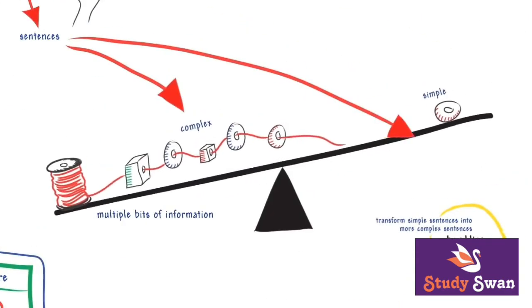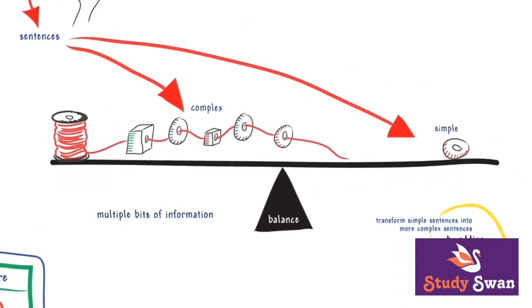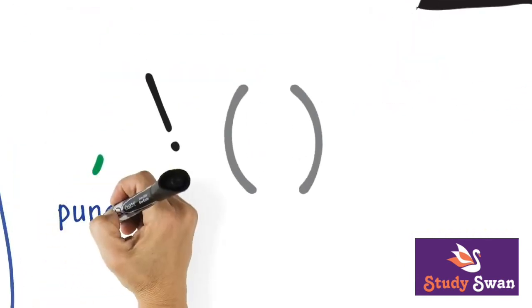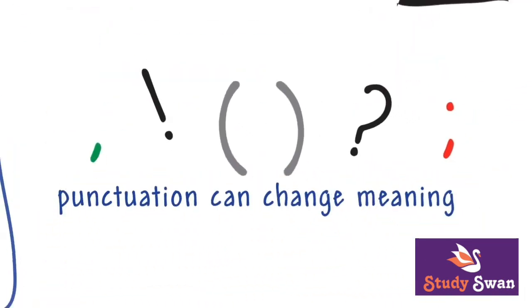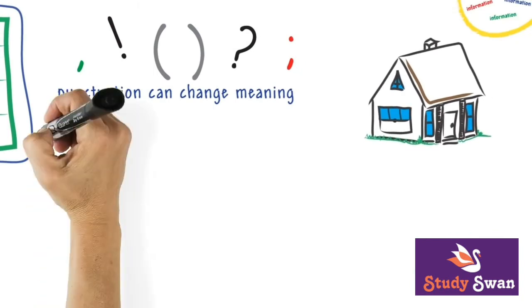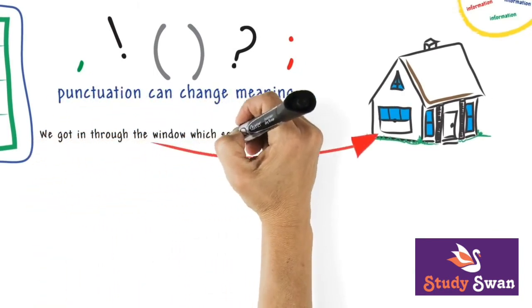In your writing, there should be a balance of simple and complex sentences. In addition, punctuation can change meaning. For instance, we got in through the window which someone had left open.